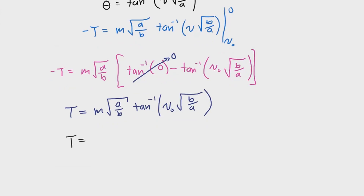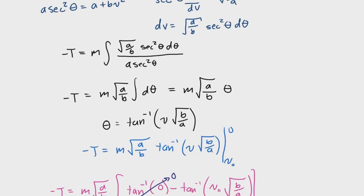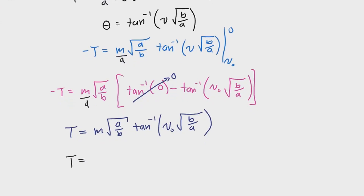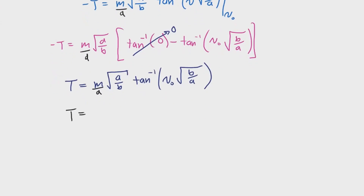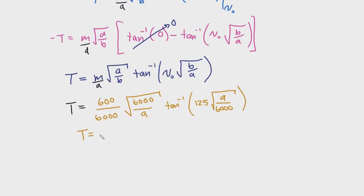A small correction: the factor should be m/a, not m alone. So the corrected formula is t = (m/a)·√(a/b) · arctan(v₀·√(b/a)), which simplifies accordingly. Plugging in all the defined constants — m = 600, a = 6000, b = 9, v₀ = 125 — the total time for the dragster to come to rest is 3.530 seconds.